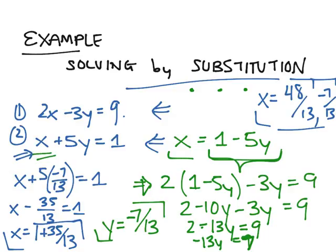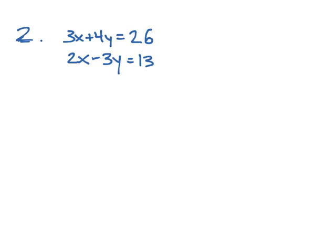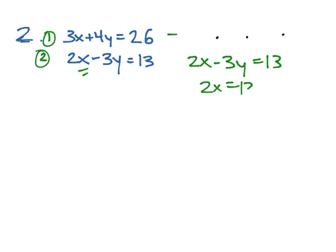Let's try another example. Here's our second system of equations. Try solving it by yourself, and we'll go over it now. As we've learned, we choose one of the equations, we choose one of the variables, and we solve for that variable in terms of the other variable. So here let's choose x. 2x minus 3y is equal to 13, so 2x is equal to 13 plus 3y, and x is equal to (13 plus 3y) over 2.